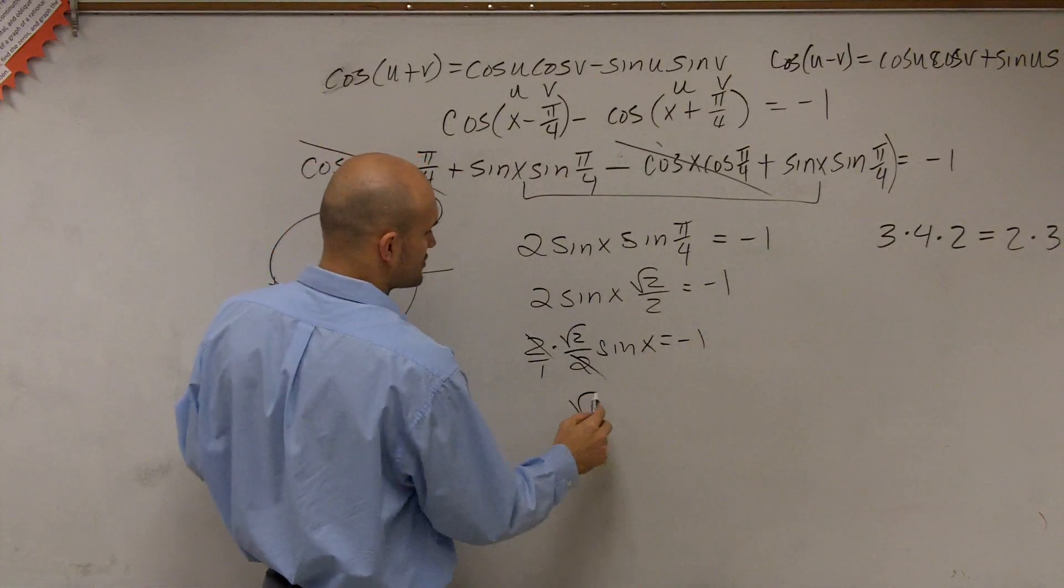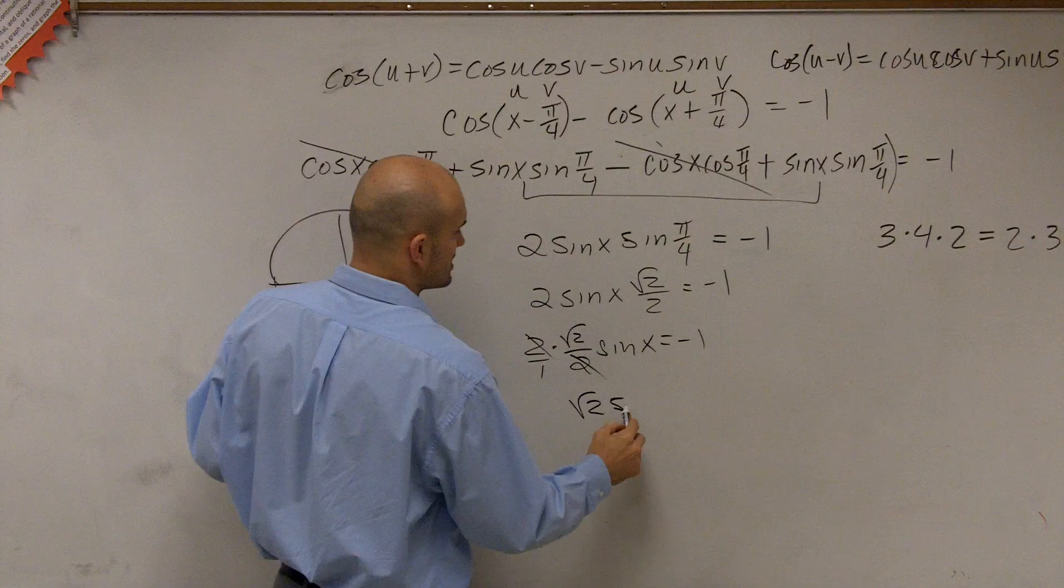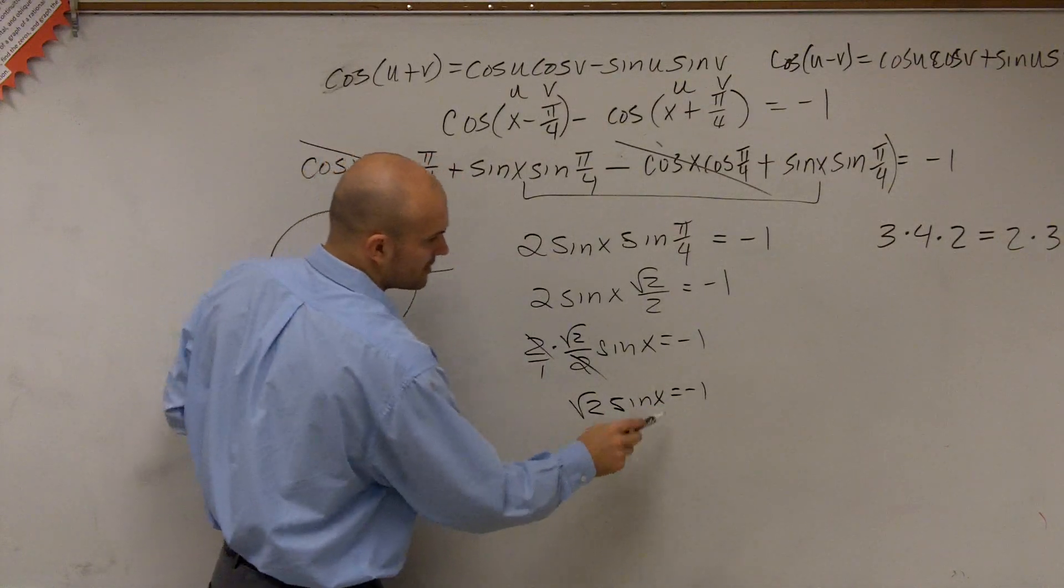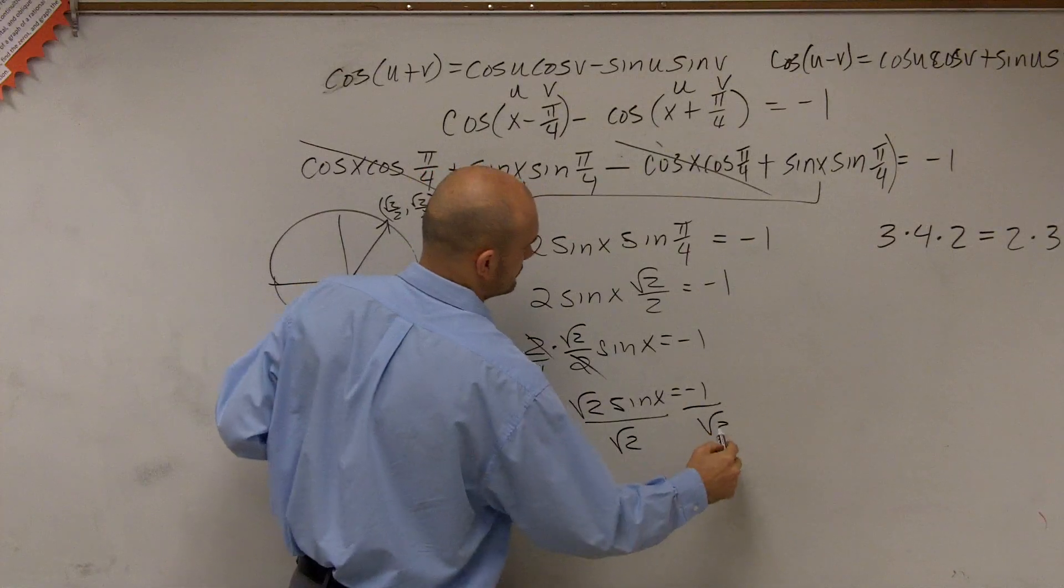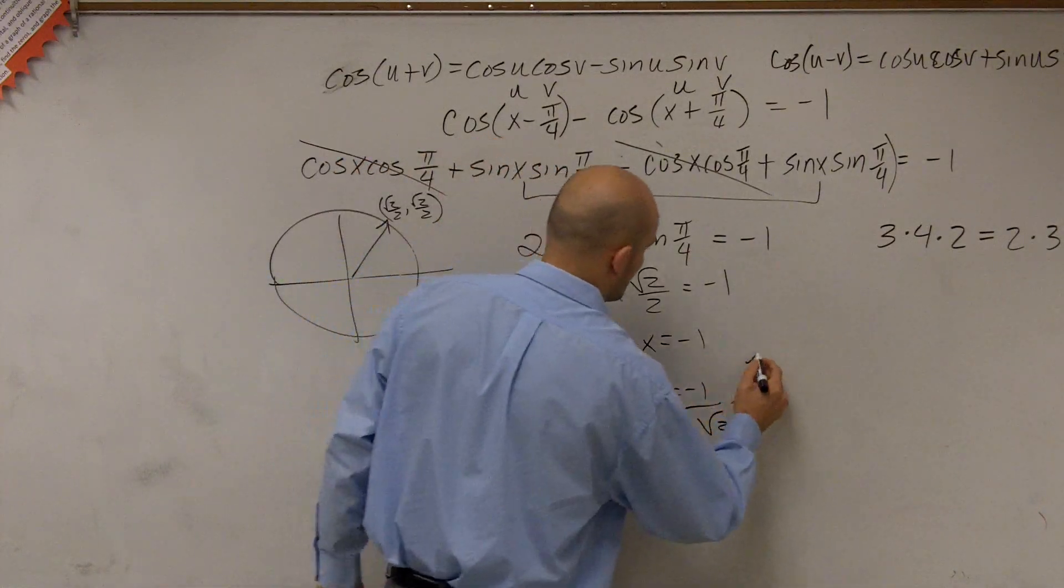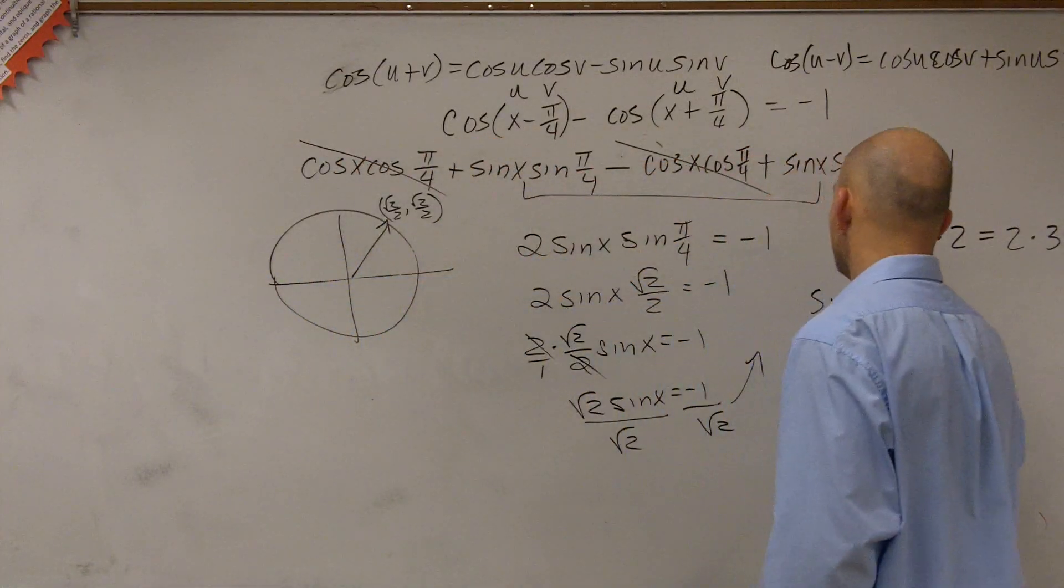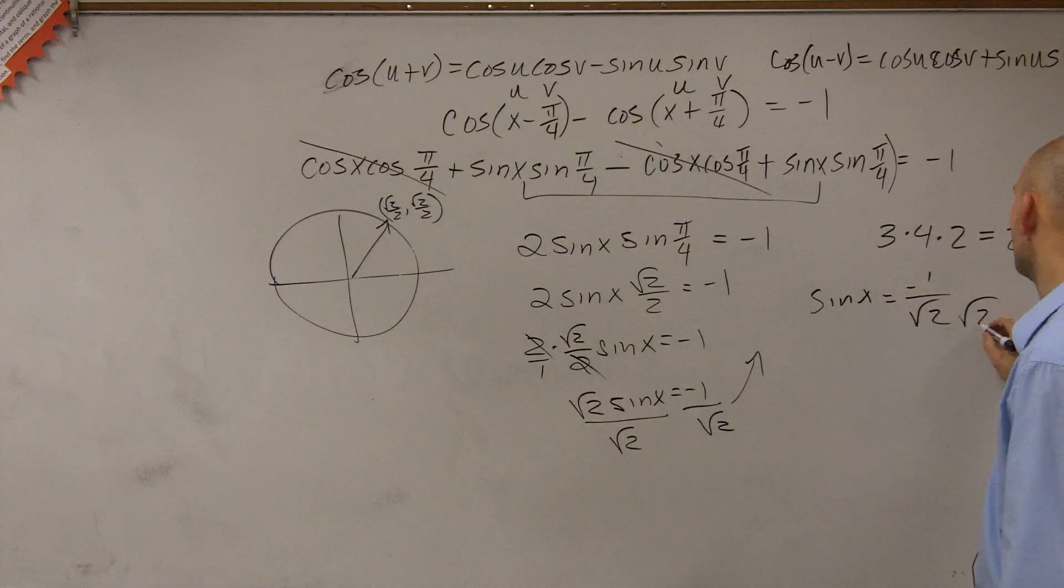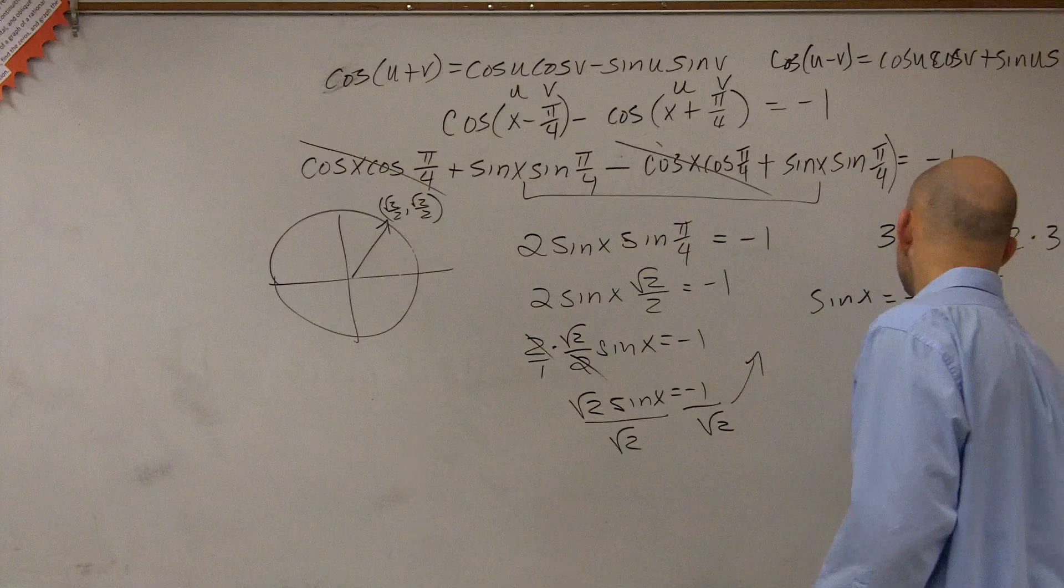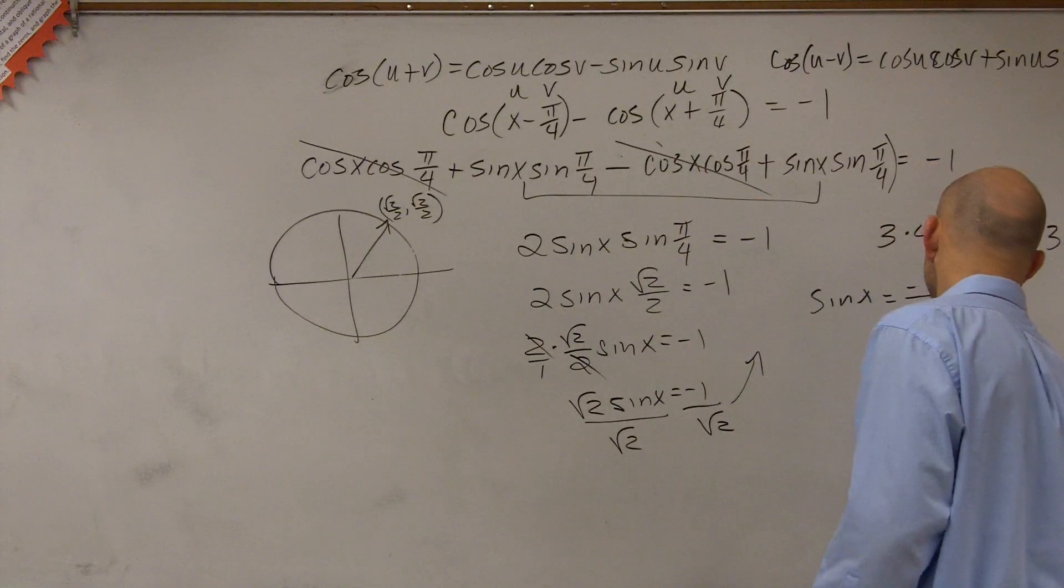So now you're left with the square root of 2 times sine of x equals negative 1. Now to solve for sine of x, you divide by square root of 2. Therefore, let's move it up here. Now we have sine of x equals negative 1 over the square root of 2. Rationalize the denominator. And we're equal to a negative square root of 2 over 2.